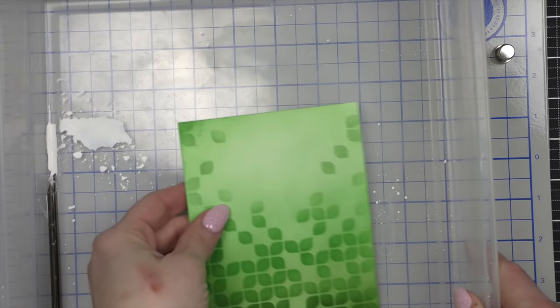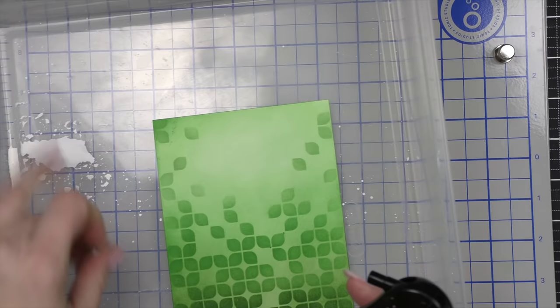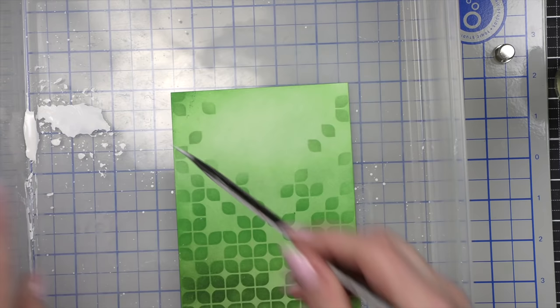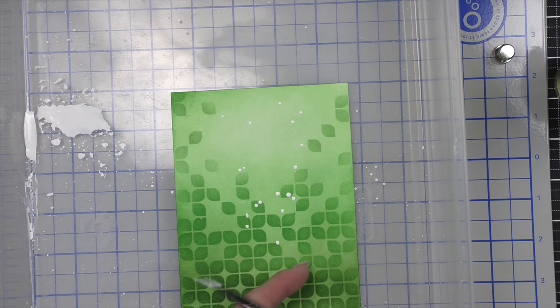I'm going to go ahead and splatter my background with a little white gouache. If you haven't checked out my quick tips video on gouache and why I have been using this as opposed to white paint, definitely check that out. I will link that either at the end or down below in the description.